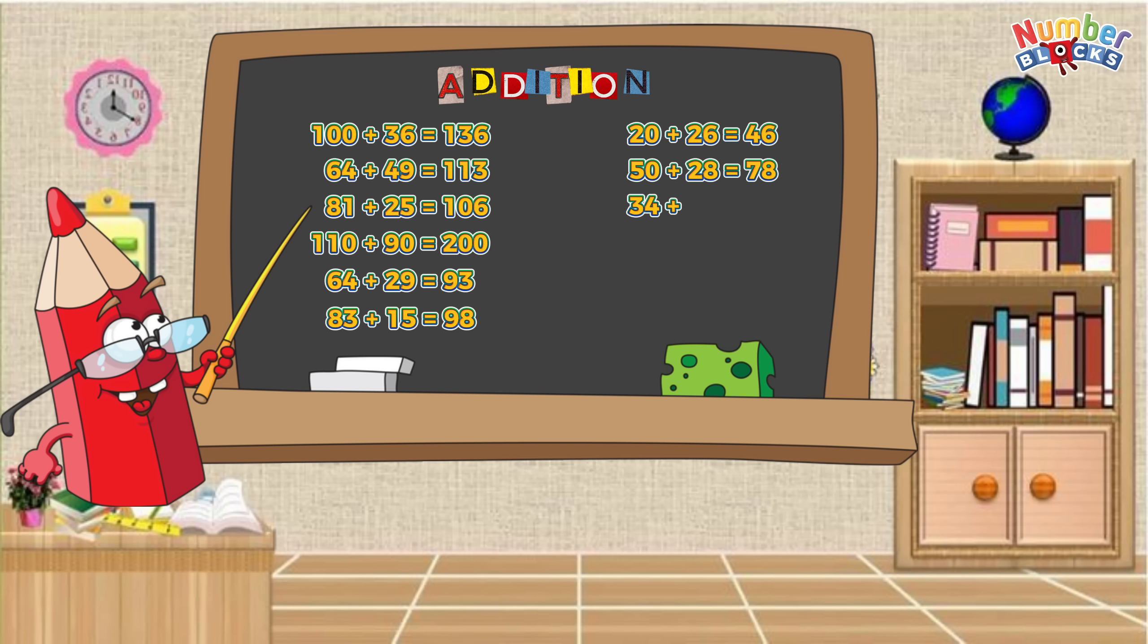34 plus 39 equals 73. 27 plus 25 equals 52. 54 plus 24 equals 78.